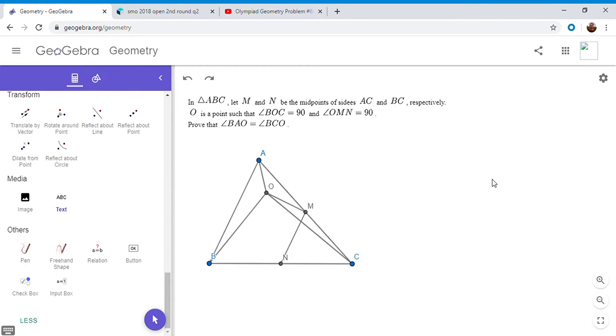All right, so the first thing that pops out to me is that angle BOC is 90 degrees, and so basically O lies on a circle with diameter BC. And N would be the center of that circle, because N is the midpoint of BC.